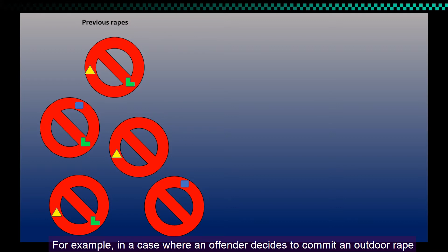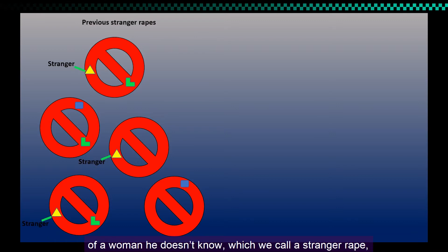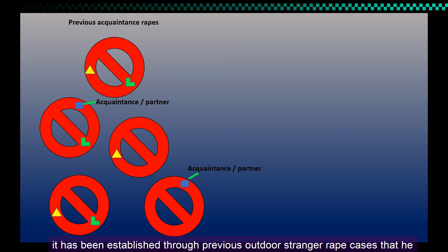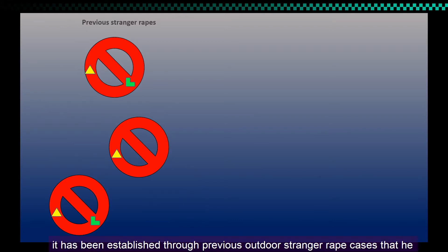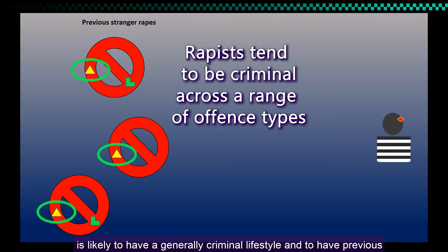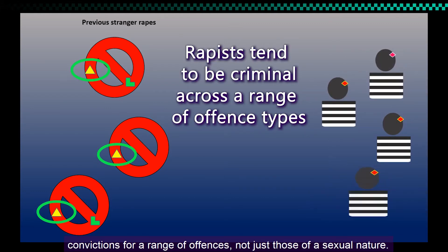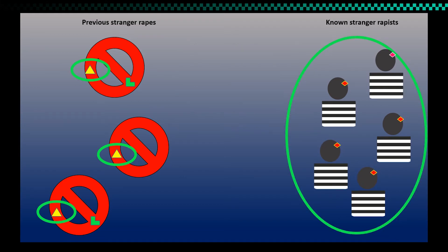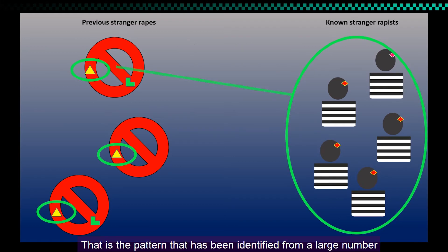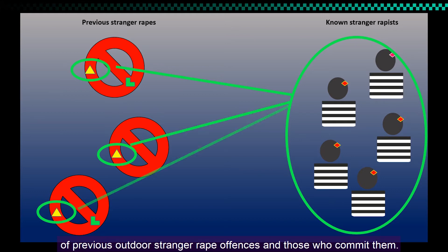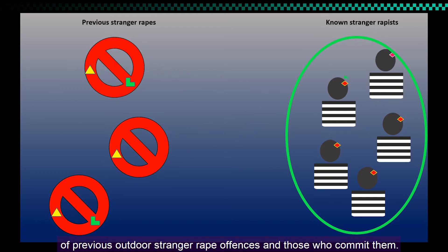For example, in a case where an offender decides to commit an outdoor rape of a woman he doesn't know — which we call a stranger rape — it has been established through previous outdoor stranger rape cases that he is likely to have a generally criminal lifestyle and to have previous convictions for a range of offenses, not just those of a sexual nature. That is the pattern identified from a large number of previous outdoor stranger rape offenses and those who commit them.